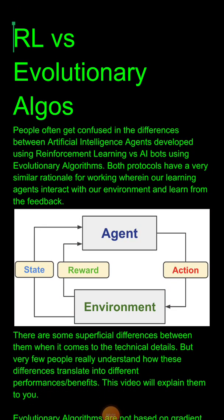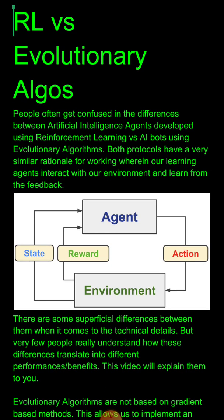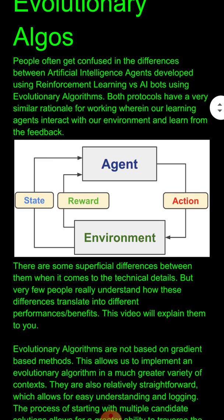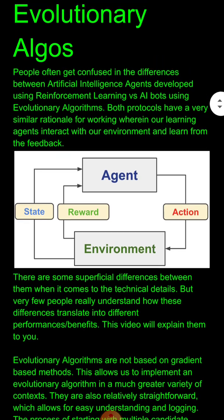We often get confused about the difference between AI agents developed using reinforcement learning and evolutionary algorithms. Both protocols are very similar — an agent performs certain actions that impact the environment, changing its state, and we can calculate the reward of this function. This framework works the same way for both reinforcement learning and evolutionary algorithms.